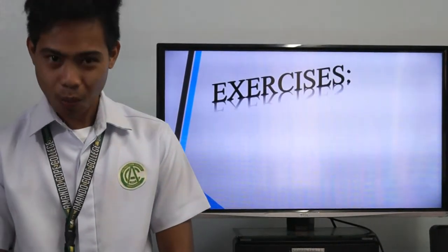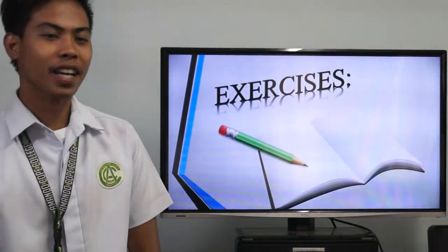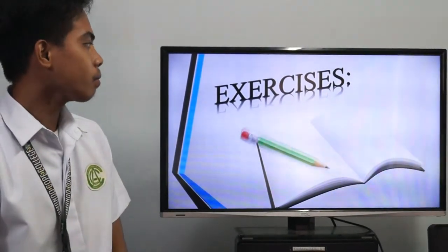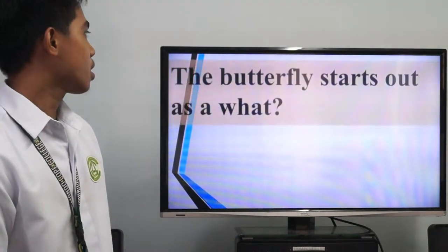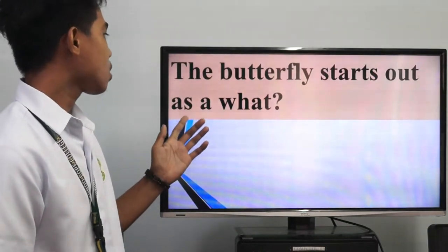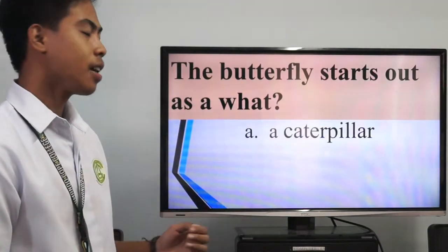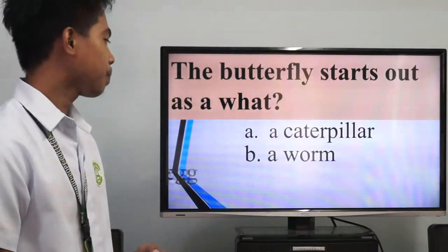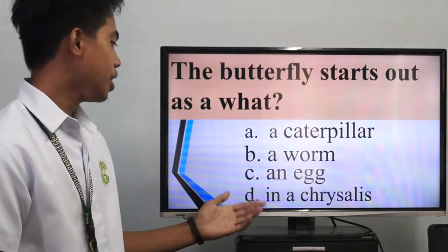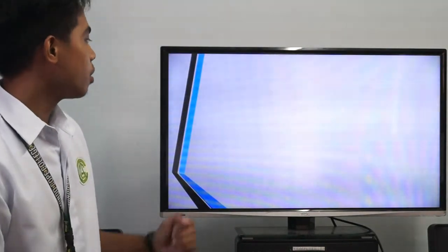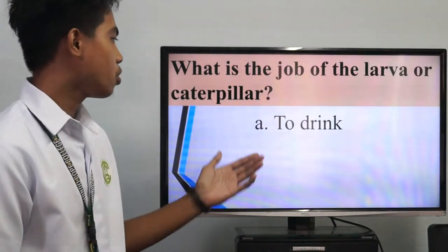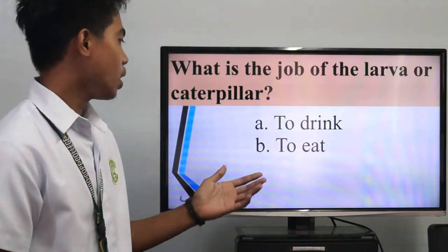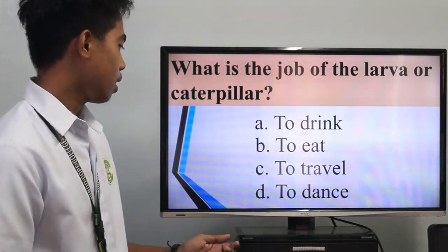Hi, I'm here again to give you some exercises regarding what we discussed. Choose the letter of the correct answer. Number one: the butterfly starts out as a what? A, a caterpillar. B, a worm. C, an egg. Or D, a chrysalis. Number two: what is the job of the larva or caterpillar? A, to drink. B, to eat. C, to travel. Or D, to dance.